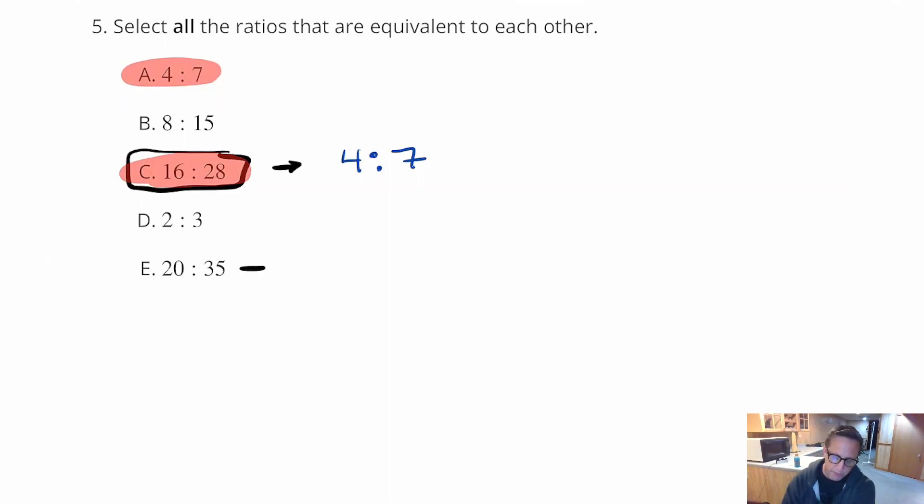20 to 35, that can be simplified by 5. You can divide both those numbers by 5. So, we get 4 to 7. And, holy cow, that's the same. So, E is the same as C and A. And then, 2 to 3, 2 to 3 is already simplified, so that's not the same. And, so is 8 to 15. So, there's the 3 that are all equal.